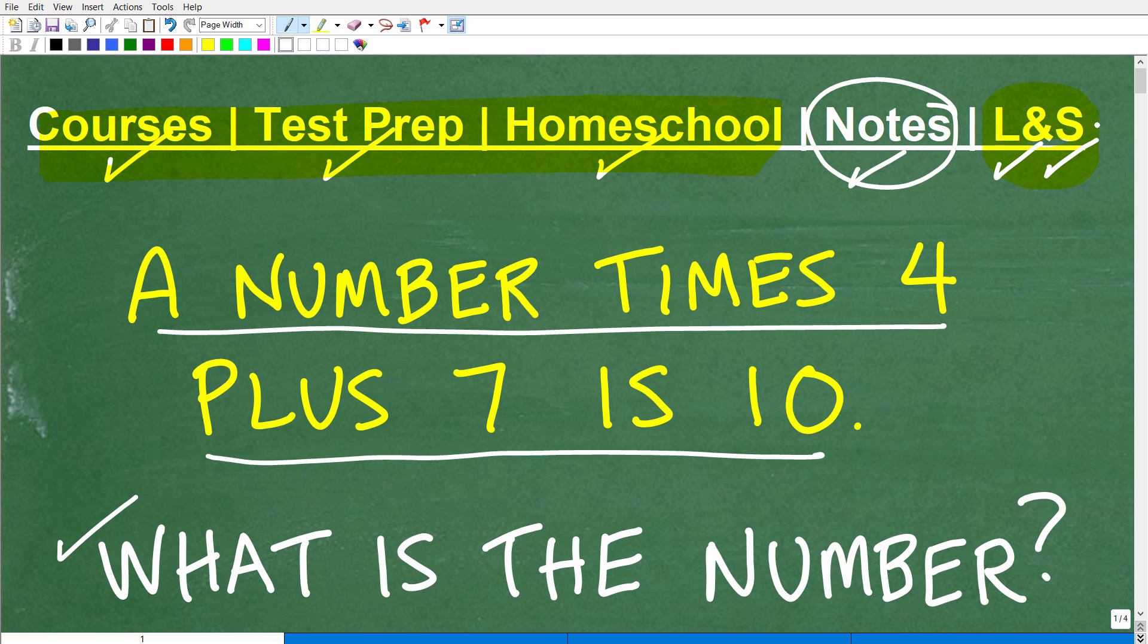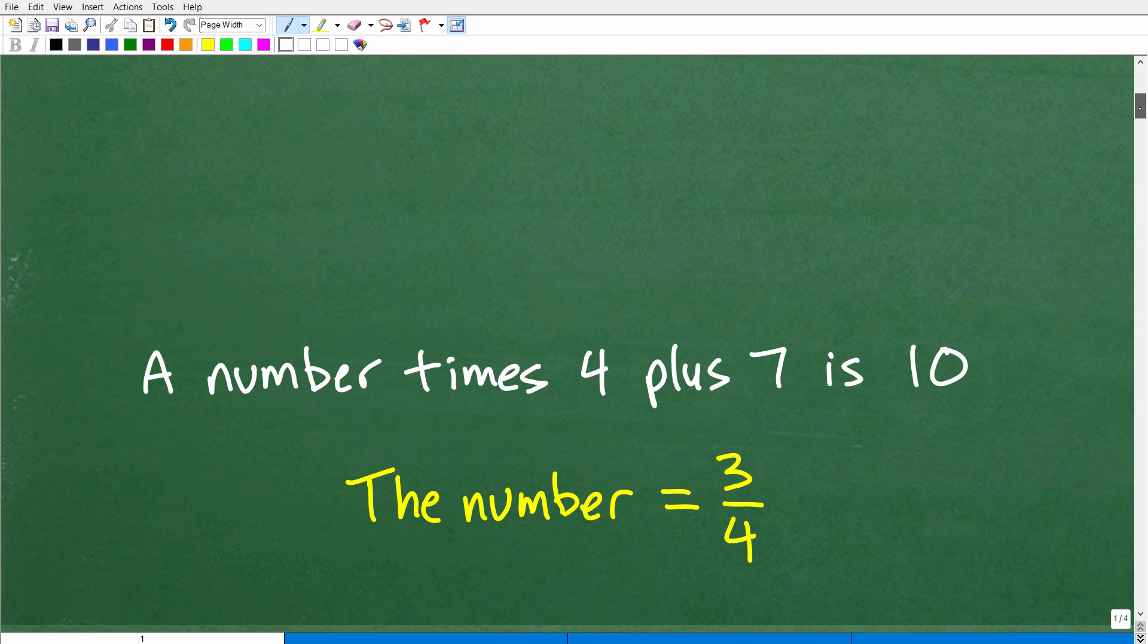And I'm going to actually show you the solution here. And then, of course, we'll talk about how to solve the problem. Okay, so a number times 4 plus 7. What's the number? The number is 3 fourths.